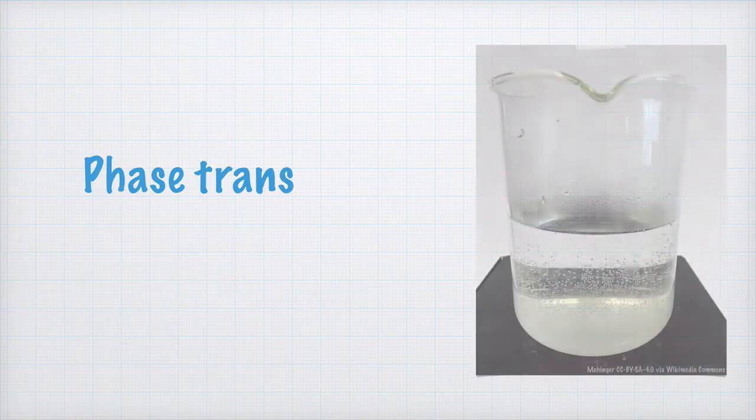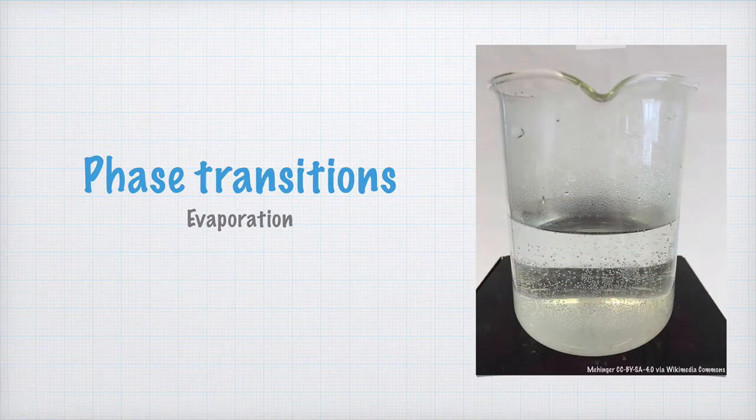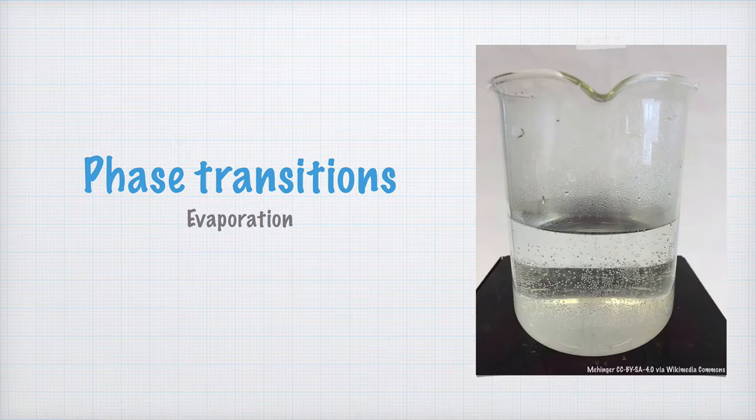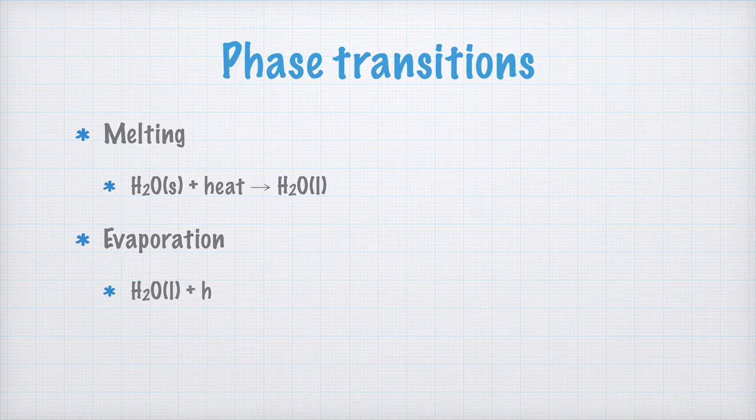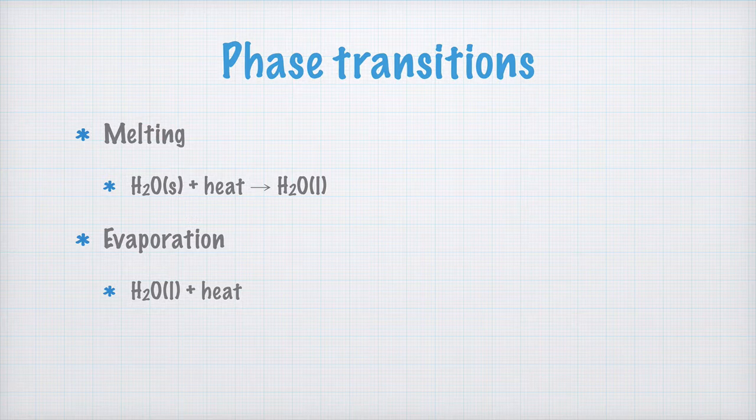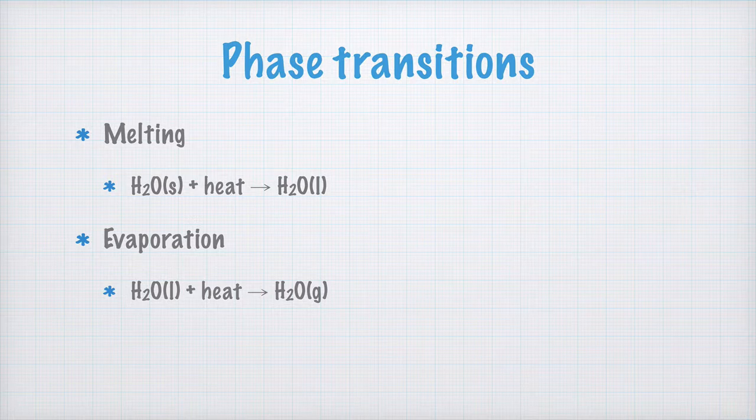Another phase transition is evaporation, that is, when matter changes from liquid to gas. In this beaker with hot water, the water evaporates and changes into water vapor. Let's add this to what we wrote before. An example of evaporation is when water in liquid form plus heat turns into water in its gaseous form, that is, water vapor. That's what this G in between the parentheses means.